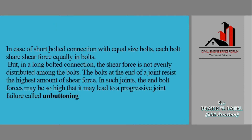In a short bolted connection with equal-size bolts, each bolt shares the shear force equally. However, in long bolted connections, shear force is not evenly distributed among the bolts — the bolts at the ends of the joint resist a higher amount of shear force. The end bolt force may be so high that it leads to progressive joint failure, called unbuttoning, where the end bolt fails first.